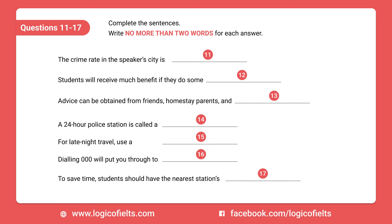Section 2. You will hear a police officer giving a lecture to some overseas students about ways to minimise risk in public. First, you have some time to look at questions 11 to 17. Hello, everyone. As new students, having just arrived, it is important that you are conversant with some aspects of living safely here. In contrast to the high crime rate in other cities, ours is very low. Nevertheless, there is some advice that would be considered prudent in even the safest of places. It is therefore in your interest to look at this map of the city and familiarise yourself with its areas, some of which may not be as safe as others, particularly at night.